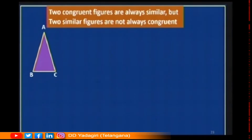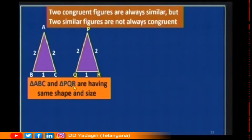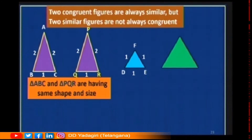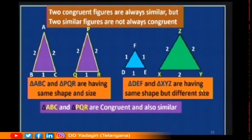Now let us check this condition. I am taking triangle ABC and triangle PQR. Are you observing these two triangles? Yes, they have the same size and the same shape. So triangle ABC and triangle PQR have the same shape and size. Here I am taking another triangle DEF and another triangle XYZ. Do they have the same shape? Yes, both are triangles. But do they have the same size? No.